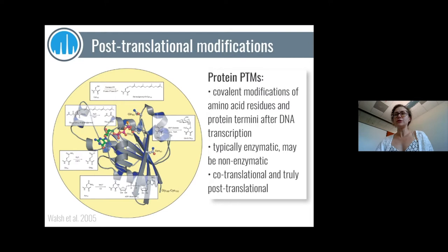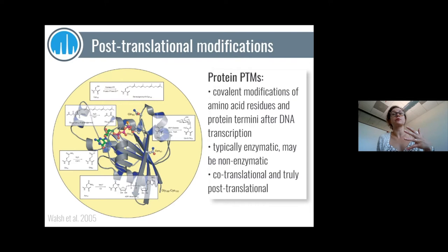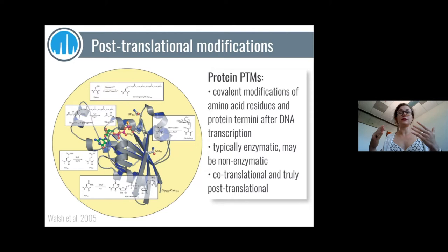Protein post-translational modifications are covalent modifications of different amino acid residues or termini of proteins. They could be deposited enzymatically through the activity of proteins inside or outside the cell, or they could be non-enzymatic, occurring as a function of time or exposure to chemicals in solution. There are truly post-translational modifications deposited after the protein is made, and also co-translational ones — for example, glycosylation occurs when the protein is being made — but both types are typically lumped together under the name post-translational modifications.